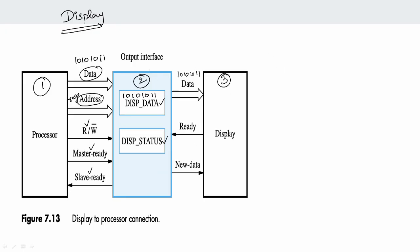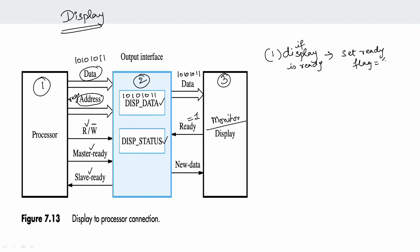So the overall flow: the first step is if the display is ready — the monitor is on and the ready flag is set to 1. This means the display is ready to accept new data.